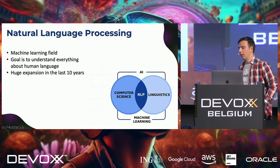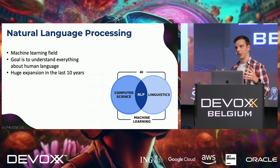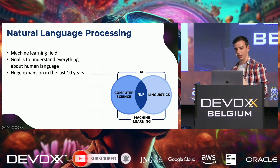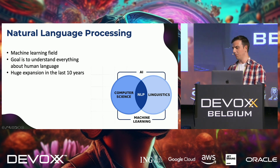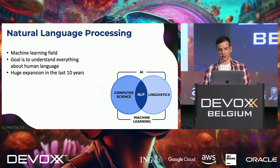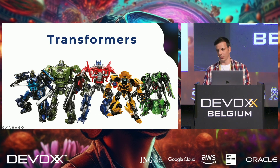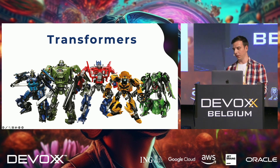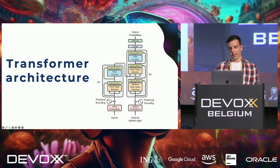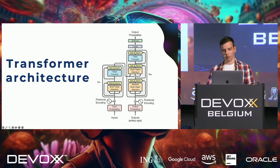Natural language processing is what we're going to talk about today. That's a nice connection between computer science and linguistics, bound together by machine learning. It has had a huge expansion in the last 10 years. About 10 years ago, something called transformers was invented — transformer architecture — and since then, large language models really got a huge explosion in popularity.